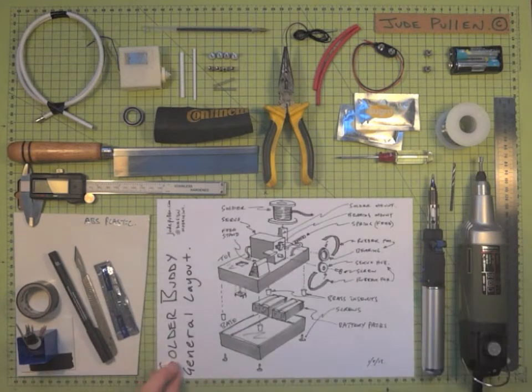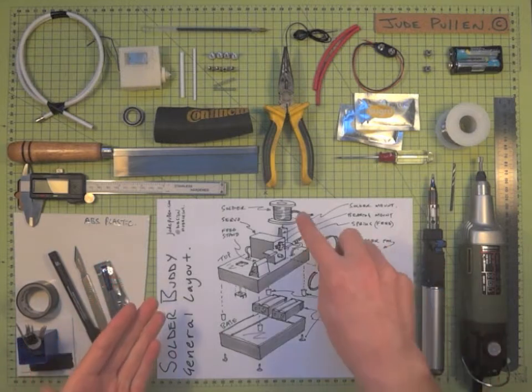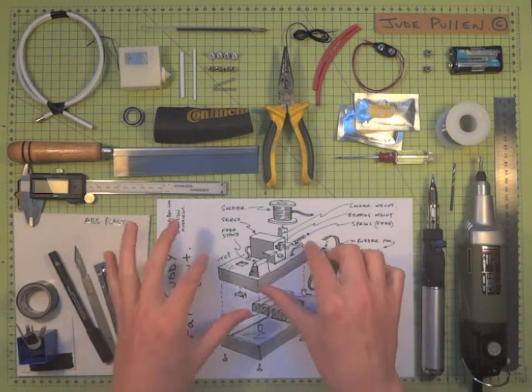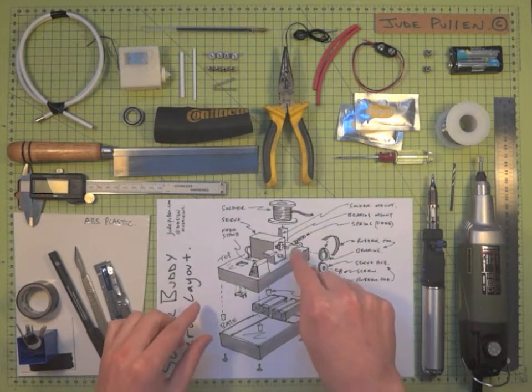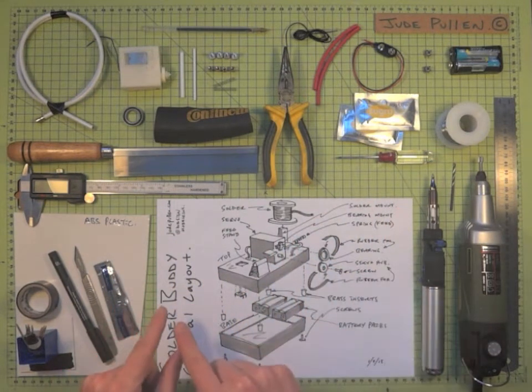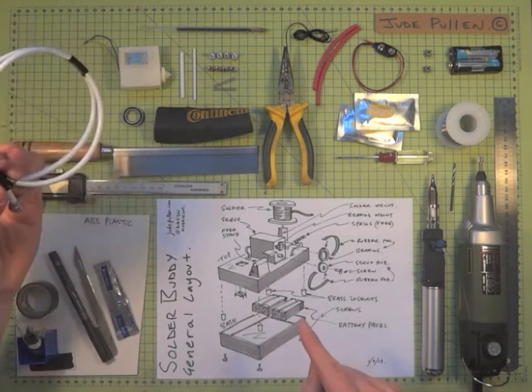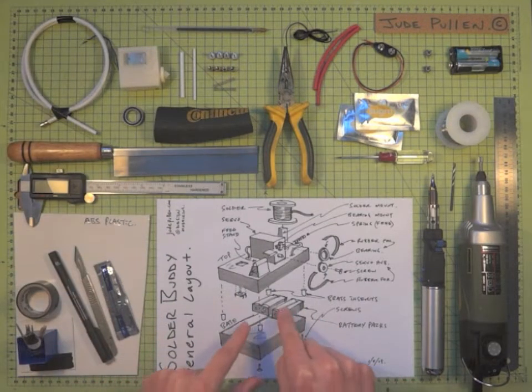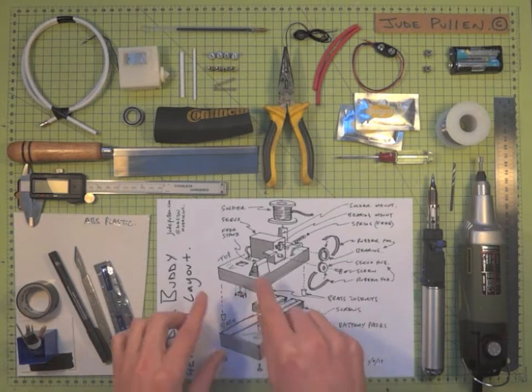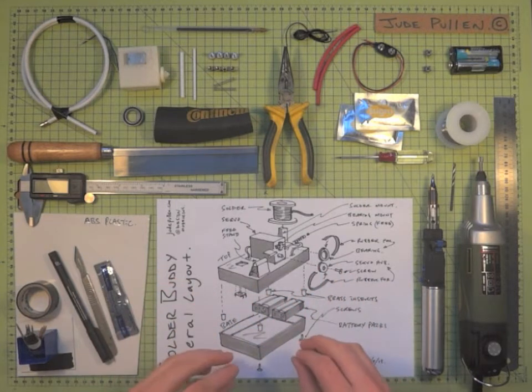So what we're basically going to end up with is an assembly of the soldering reel sitting on top of basically a box which will have your servo motor feeding the solder through down the bicycle brake cable. And we're obviously going to have to make a little base which will contain the batteries and various other electronic components.